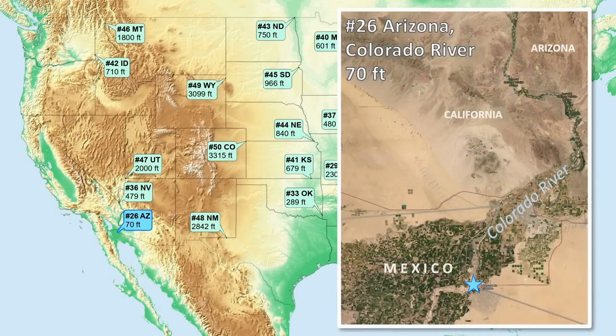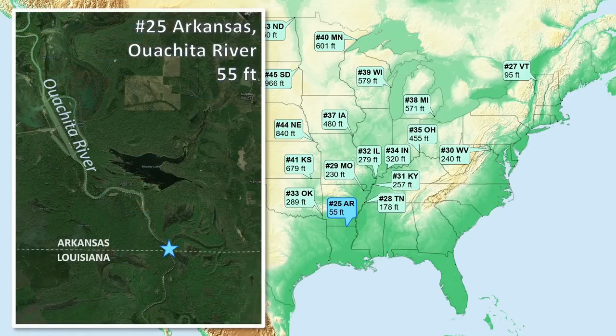Number 26 is Arizona, on the Colorado River at the border with Mexico. Number 25 is Arkansas, on the Washita River. This is the lowest low point still above sea level.